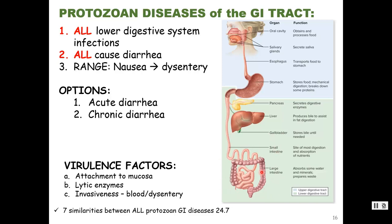These parasites are going to be in the intestine and they all cause diarrhea. There is a range of symptoms though — some people are asymptomatic, some feel a little nauseous, some vomit, some just have diarrhea. And then some diseases, like amoebic dysentery, go all the way to dysentery. I've broken up the four diseases for you.